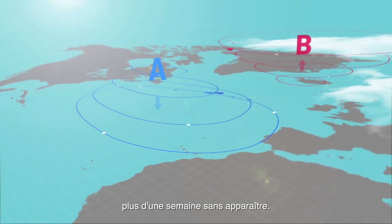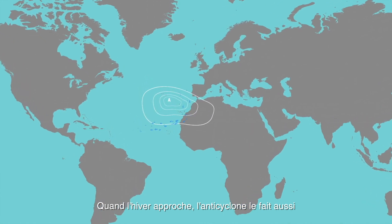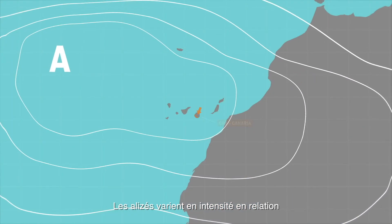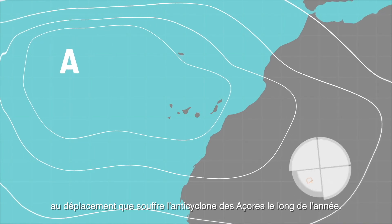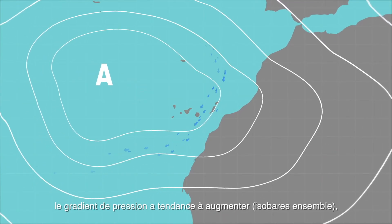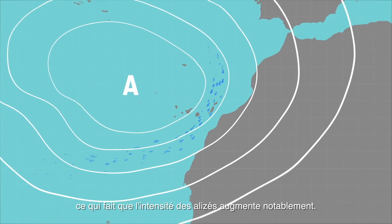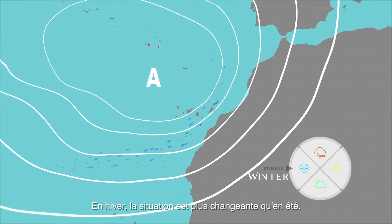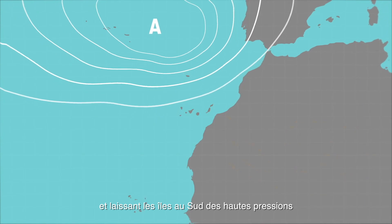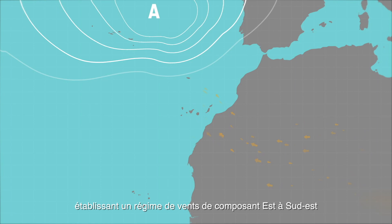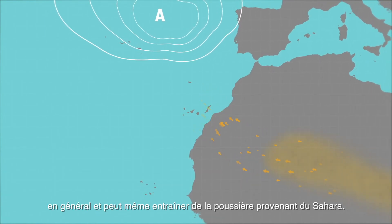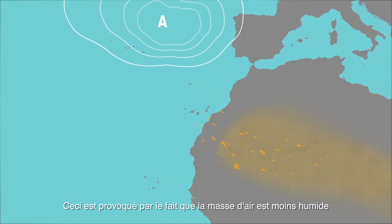In summer, the high pressure is rarely away for more than a week. When winter approaches, the anticyclone may be placed on the islands or close to them, causing the trade wind regime to decrease and disappear. The intensity of the trade winds varies in relation to the shift of the Azores anticyclone throughout the year. When the distance between the center of the anticyclone and the Canary Islands is shortened, the pressure gradient usually increases with the isobars being closer together, so the intensity of the trade winds also increases considerably. In winter the situation is more changeable; the center of the anticyclone often moves to the north and away from the Canary Islands, thereby leaving the islands to the south of the high pressure, and a wind regime with an east to southeast component appears.